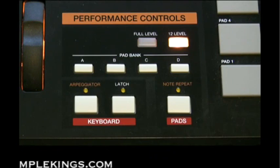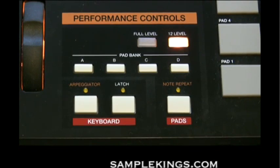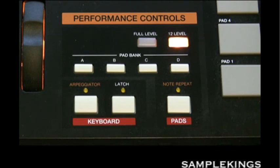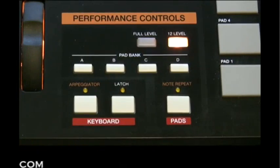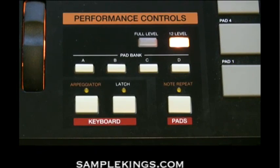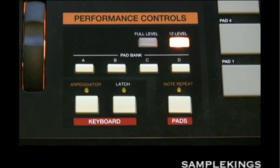Our next button is our 12 levels. This button activates all 12 pads to different velocity levels, all mapped out according to the last pad hit. So if you hit a pad and turn 12 levels on, you have 12 different velocity levels for each pad. In your manual you'll see a chart showing what each pad's velocity would be.